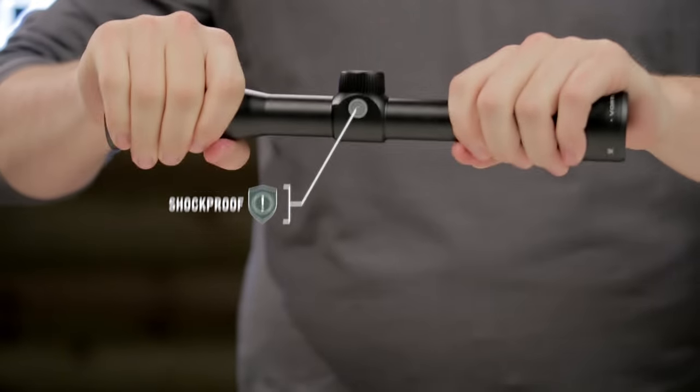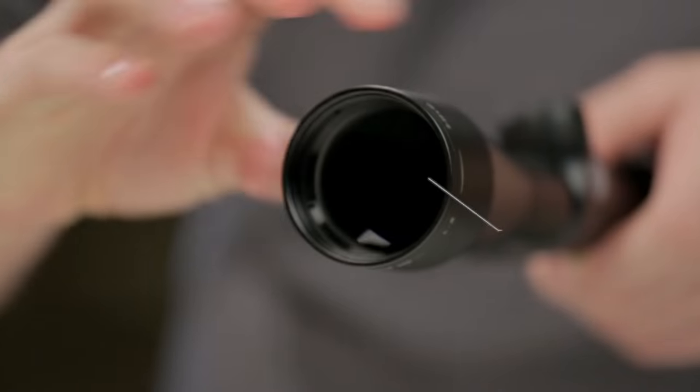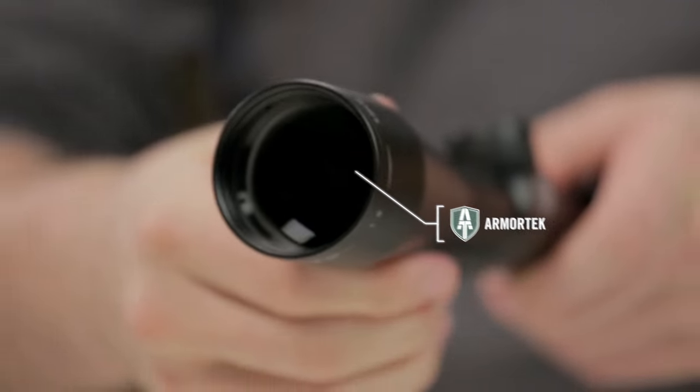A single-piece, hard anodized tube enhances strength and durability, and Armortech coatings protect exterior lenses from scratches, oil, and dirt.